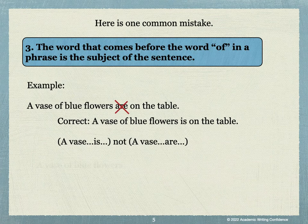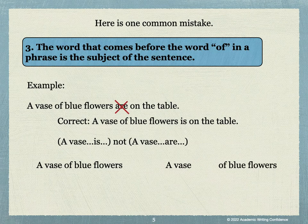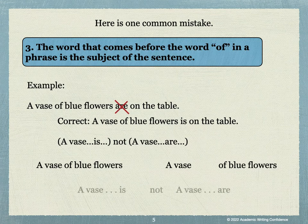The words a vase of blue flowers can be divided into a vase and of blue flowers. Of blue flowers talks about what is in the vase. So the subject of this sentence is a vase. Again, it should be a vase is, not a vase are.